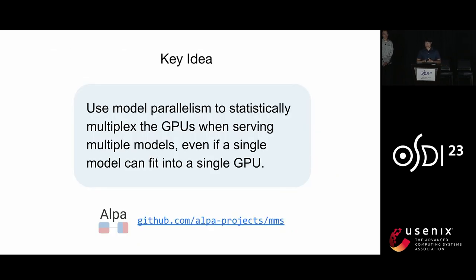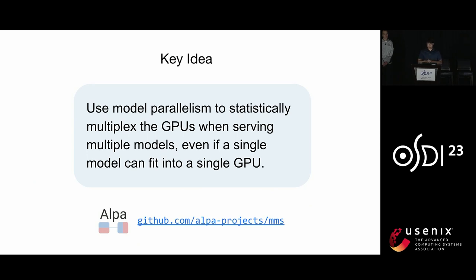In summary, our key idea is quite simple: we use model parallelism to statistically multiplex the GPUs when serving multiple models, even if a single model can fit into a single GPU. We extend this idea to the production environment and design AlpaServe to navigate the complex trade-off space. The project is open sourced — you can check the code at the GitHub link. Thanks for listening, and we are glad to take questions in the Q&A session.